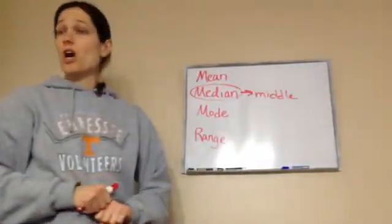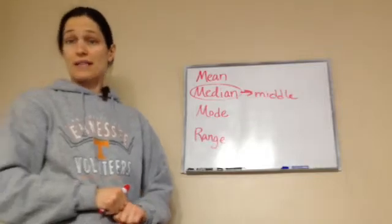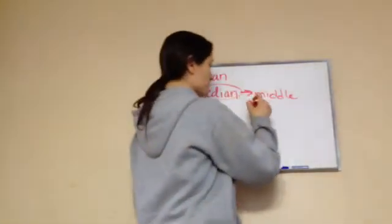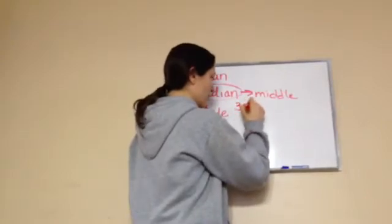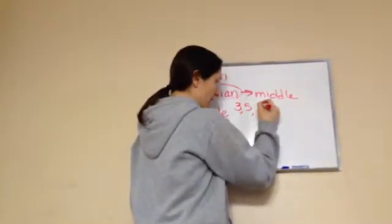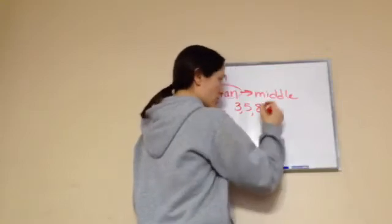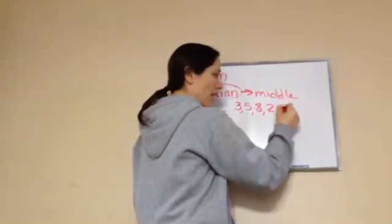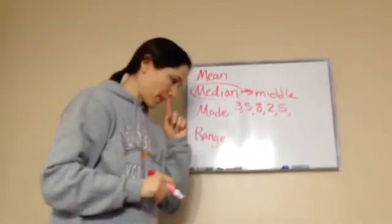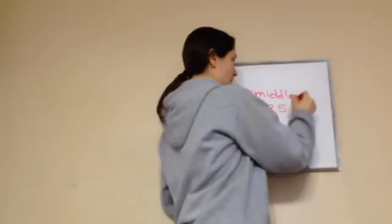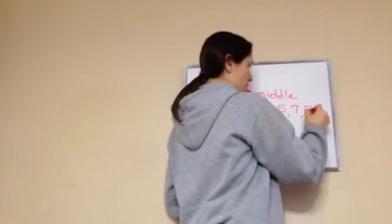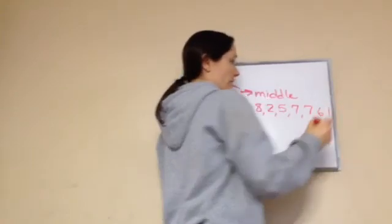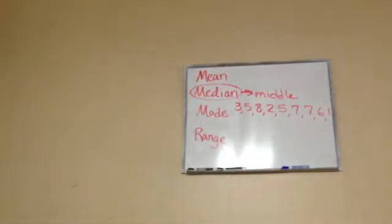Now, I'm going to use a totally different set of numbers. So write this down. Ready? Three. Five. Eight. Two. Five. Seven. Six and one. Those are the set. Write those down.